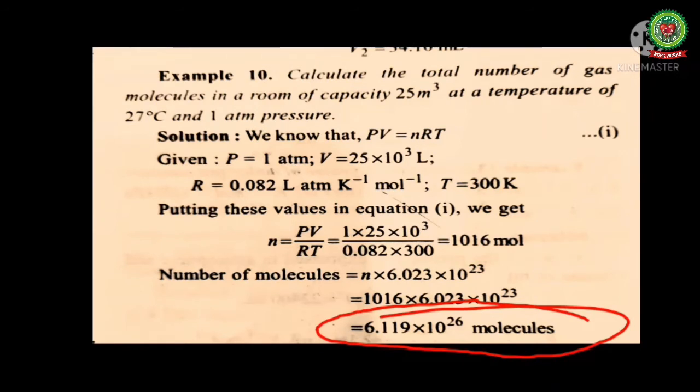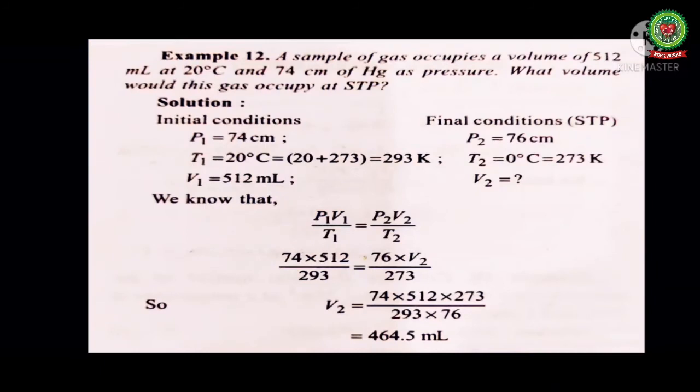Now let's solve a numerical on the basis of combined gas law. A sample of gas occupies a volume of 512 ml at 20 degrees Celsius and 74 cm of mercury pressure. What volume would this gas occupy at STP? We will use combined gas law here: P1 V1 upon T1 equals P2 V2 upon T2. P1 V1 and T1 are our initial conditions. P1 given to us is 74 cm of mercury, T1 is 20 degrees Celsius converting it into Kelvin scale will be 293 Kelvin, and V1 is 512 ml.